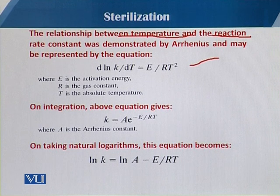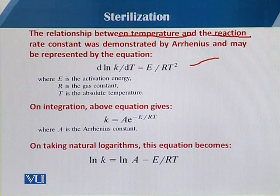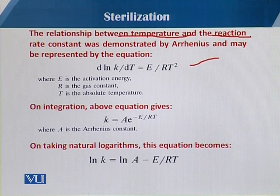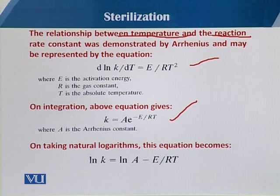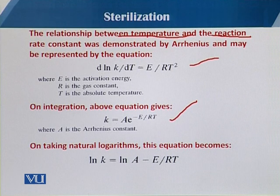This equation is called the Arrhenius equation. The relationship of the death rate and temperature can be demonstrated by the Arrhenius equation: d(ln K)/dt = E / (RT²), where E is the activation energy, R is the gas constant, and T is the absolute temperature. Taking the integration of this equation gives: ln K = ln A − E/RT.